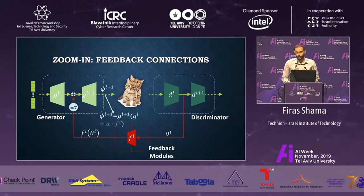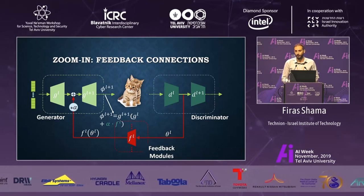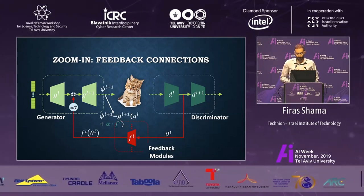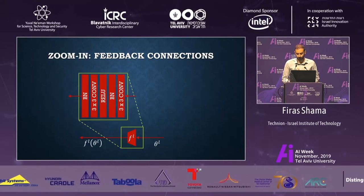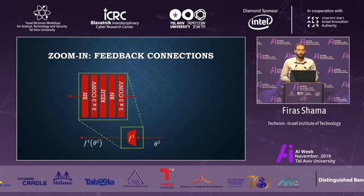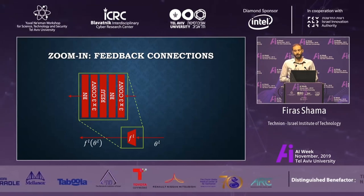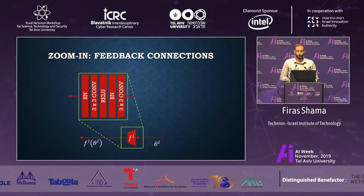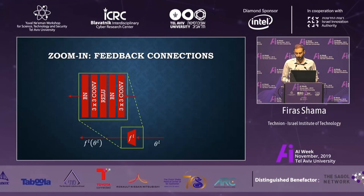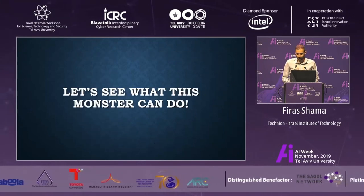Eventually we get new results that look very similar to the originals but much better. The feedback model is a very tiny network — in its basic form it's comprised of two conv layers.